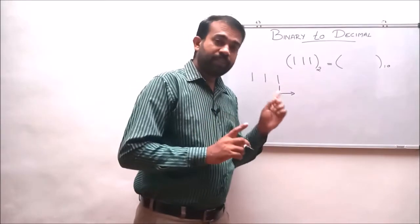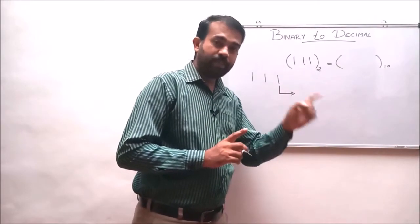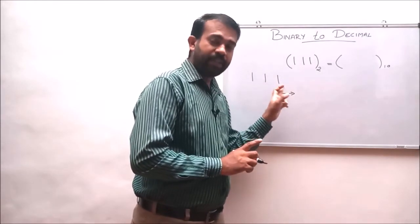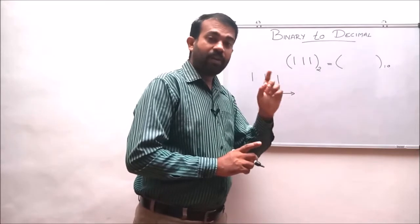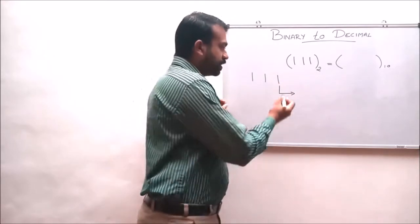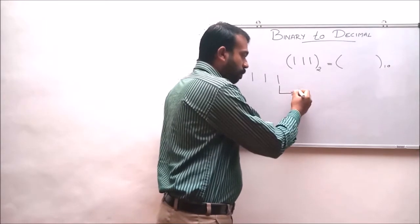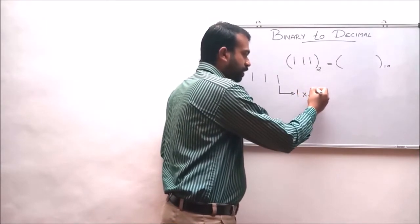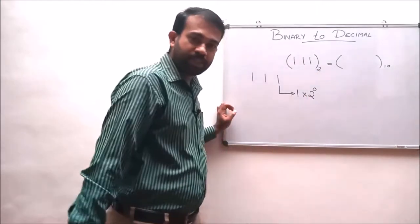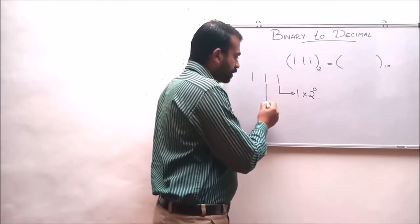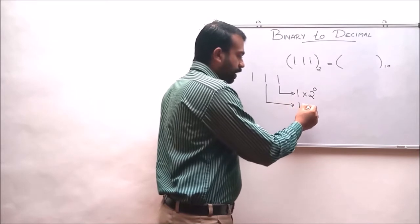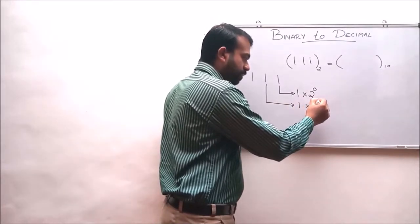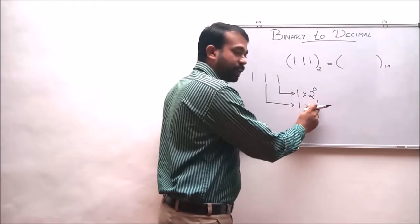While converting this binary number into its decimal, we multiply each binary digit by 2 raised to the power of its digit position. So at the 0th digit position we multiply by 2 raised to 0, and at digit position 1 we multiply by 2 raised to 1.